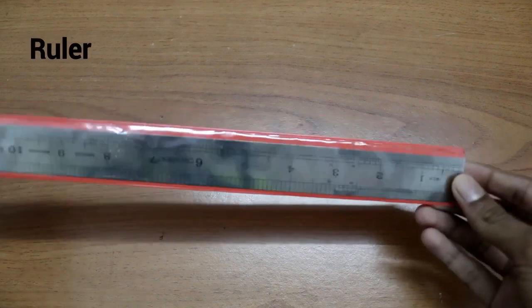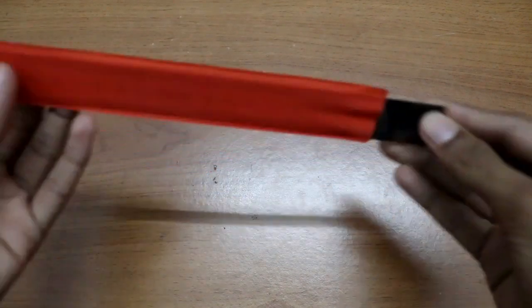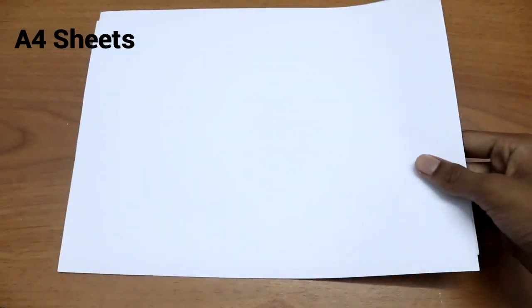Then you'll be needing a ruler. Most of these items can be found in your house or you can get them at a cheap price in the shop. At last we need A4 sheets - you can have two or else one.